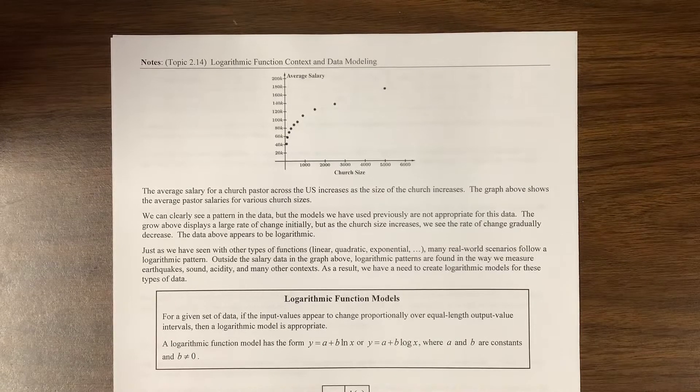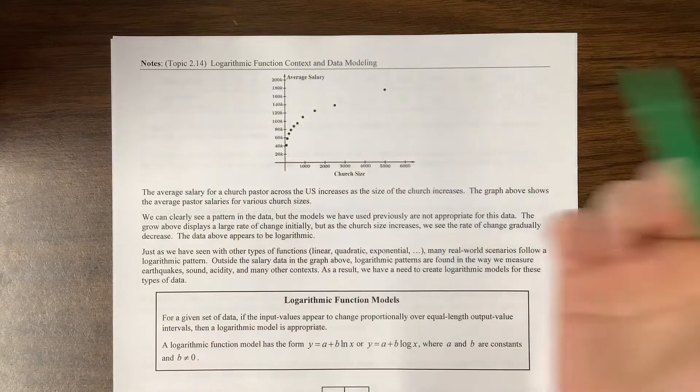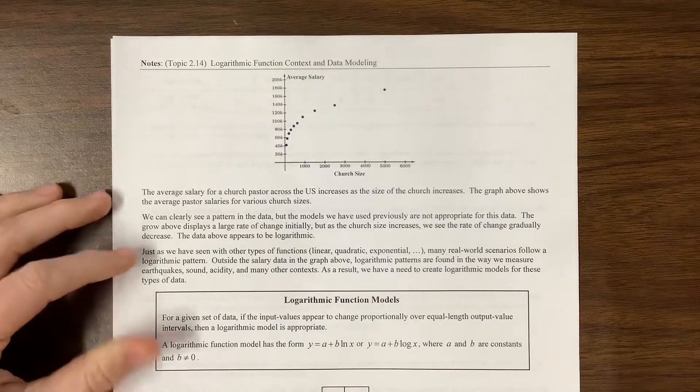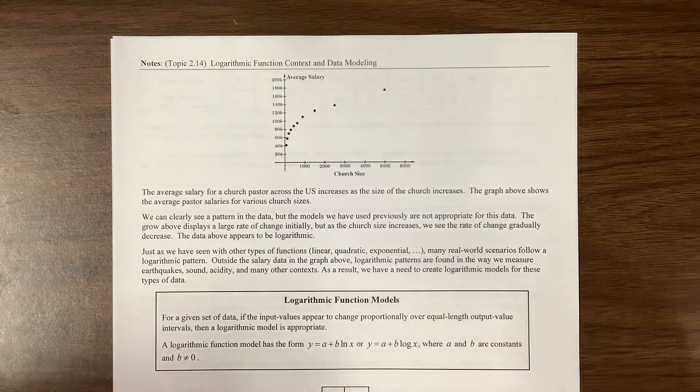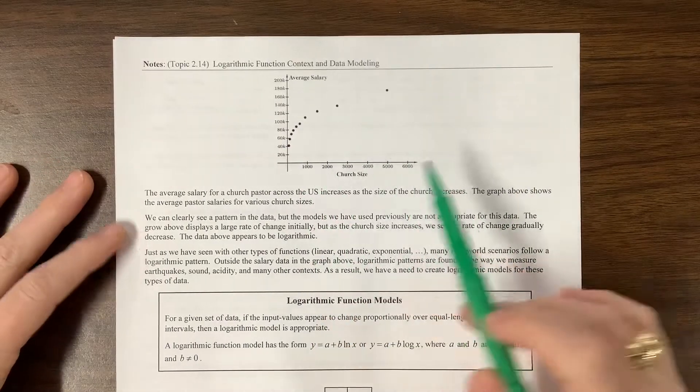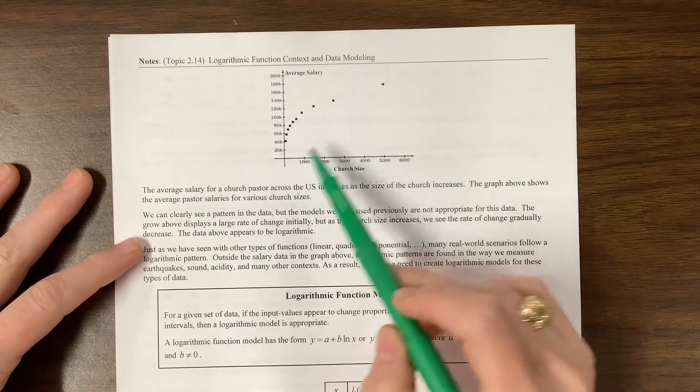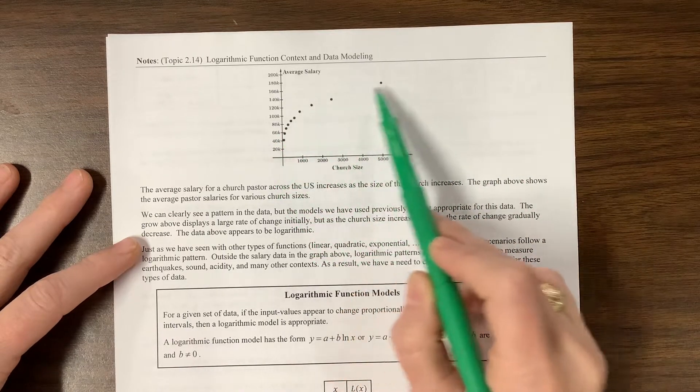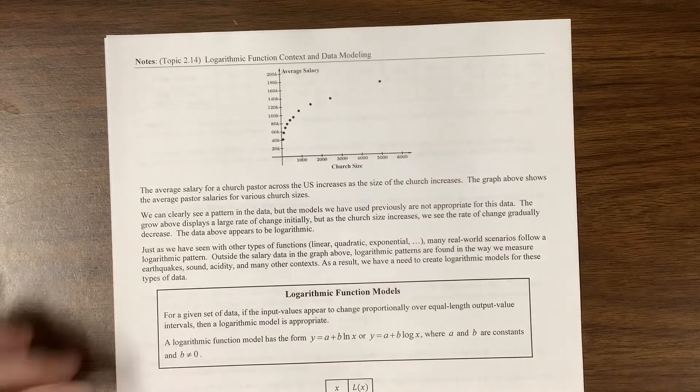Hey AP Precalc, it's Ms. Kosh. We are looking at topic 2.14, so they're calling this logarithmic function context and data modeling. The good news is that we keep doing some of the same kind of things, but with different types of functions. They're noticing here that we've got the size of a church and the salary of its pastor, and it seems to follow some sort of a logarithmic pattern. So there's one example of where a logarithm might be beneficial.